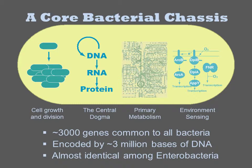In total, this requires about 3,000 genes to encode and thus about 3 million bases of DNA. The set of genes involved in these processes is base-per-base identical amongst many enterobacterial genera, and clear homology to those genes is present in other prokaryotes.